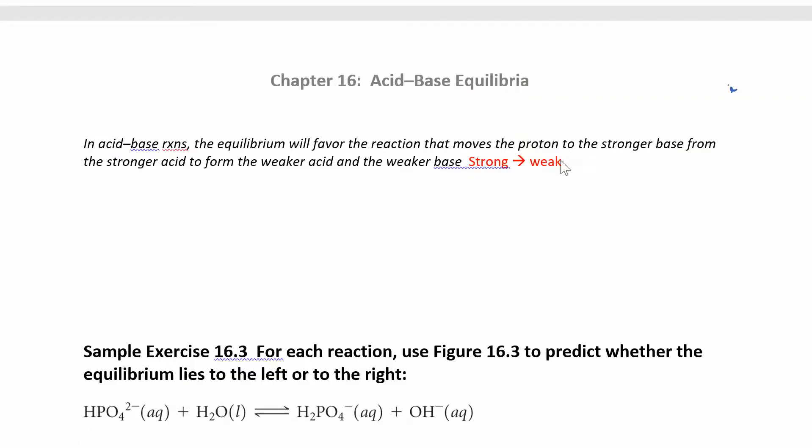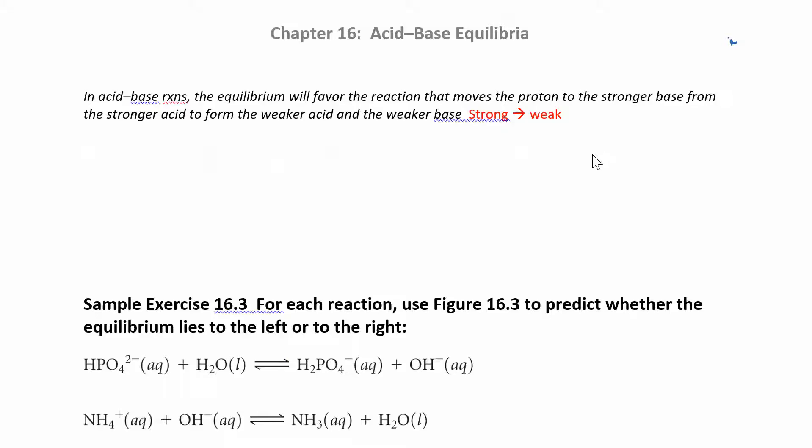So it always goes from strong to weak. The reaction is always going to go from the stronger acid to the weaker acid. The strong thing wants to dissociate completely into ions. So let's look at a couple examples here.